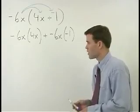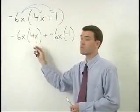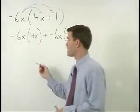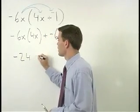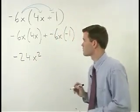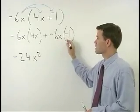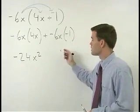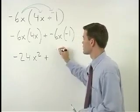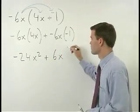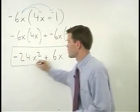Remember that negative 6x times 4x simplifies to negative 24x squared. And negative 6x times negative 1 is just positive 6x. So that's your answer.